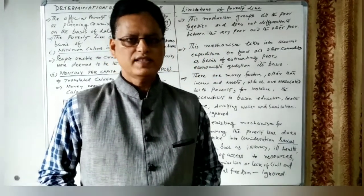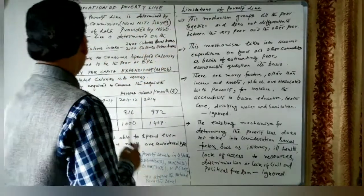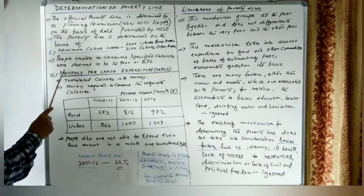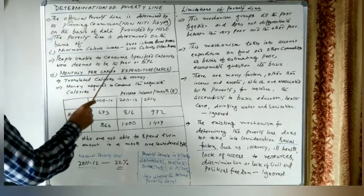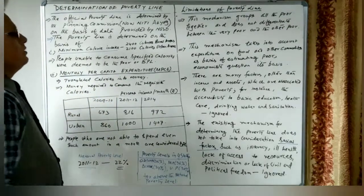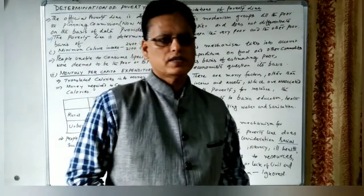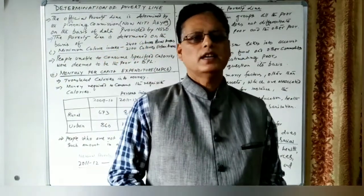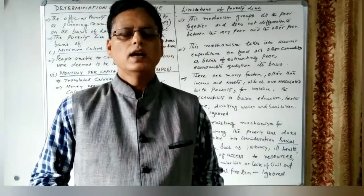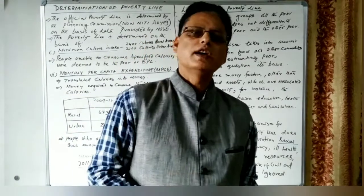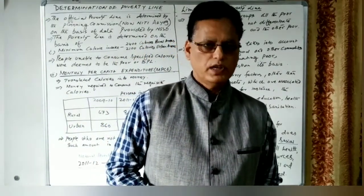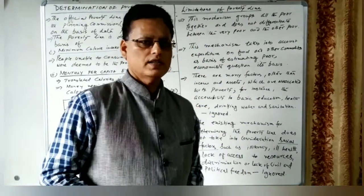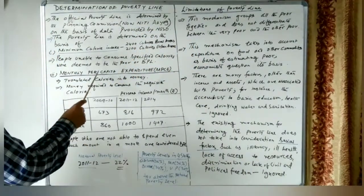People who are unable to consume the specified number of calories are deemed to be poor, or below the poverty line. Any person getting less than the recommended calories is classified as below the poverty line. The second method is Monthly Per Capita Expenditure.